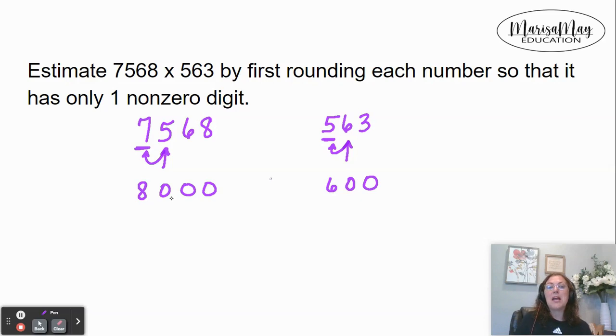Now that we've done the rounding, we multiply. I don't know about you, but I love to use the trick to multiply with numbers that end in zero. We multiply the eight times the six, which gives us 48. And then however many zeros there are, we put that many zeros on our answer.